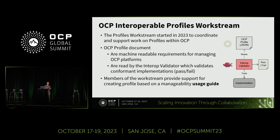One issue with profiles is that they're written in JSON, which means you first have to understand JSON, and then there's a semantic we put on top called the profile semantic. Most people don't want to know this — especially when we talk to other organizations like the server project or networking project, we cannot show them a JSON profile; they'll walk out of the room. So we've created another manifestation called a user's guide — basically a Word document that we bring to other projects so we can have a cognitive discussion about which use cases they're interested in. Once we agree, the hardware management project converts that discussion into a set of profiles.